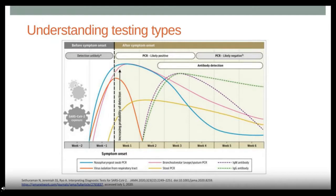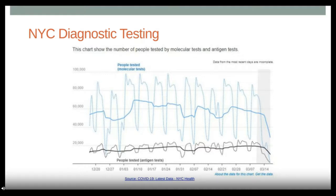Looking at diagnostic testing in New York City from January to early March, molecular tests have been used consistently at around 60,000 tests per day — spiking through the week and dropping on weekends. Rapid antigen tests, while being done, have stayed at a lower steady state than PCR. So there is still substantial molecular testing being done.